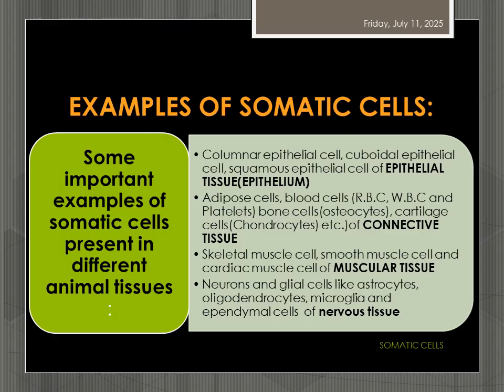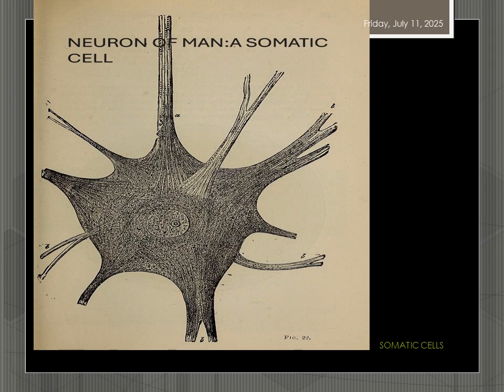And finally, nervous tissue has somatic cells like neurons and glial cells. Glial cells are astrocytes, oligodendrocytes, microglia and ependymal cells. Here in this slide you can see a neuron of a human, which is a somatic cell.